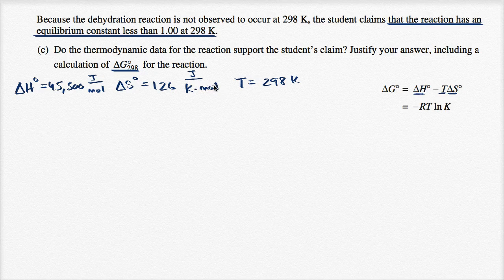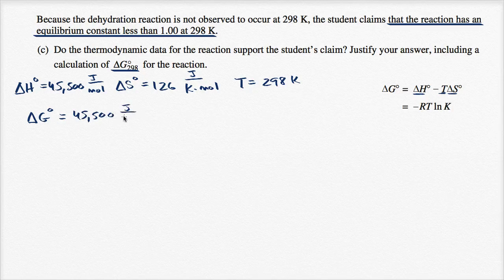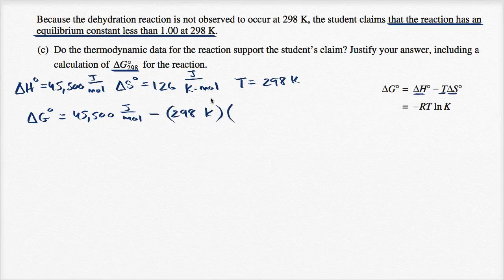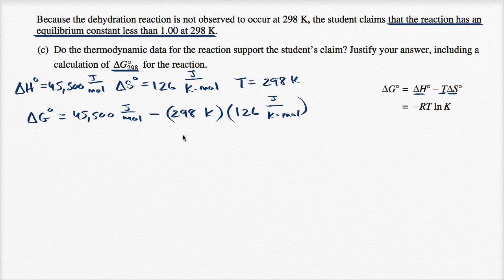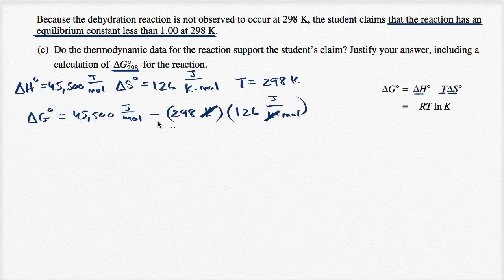Now we can calculate delta G. Delta G equals the change in enthalpy, 45,500 joules per mole, minus temperature, 298 Kelvin, times the change in entropy, 126 joules per Kelvin mole. Notice that the Kelvin units cancel out, leaving units of joules per mole for both terms.